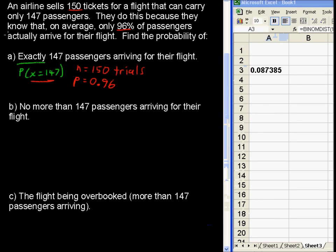We'll hit OK, and it'll show us the answer. 0.08. So, I'll write that down right over here. 0.087, rounding to three decimal places. That's the probability of getting exactly 147 successes in 150 trials.